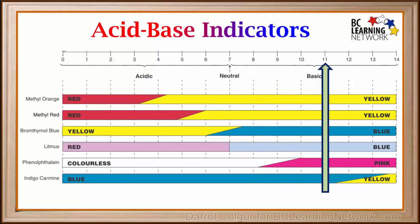At a pH of 11, methyl orange and methyl red are both yellow. Bromthymol blue, litmus, and indigo carmin are blue, and phenolphthalein is pink.